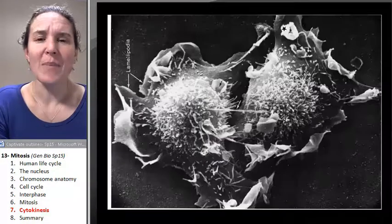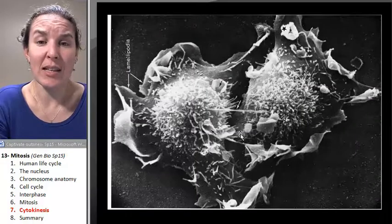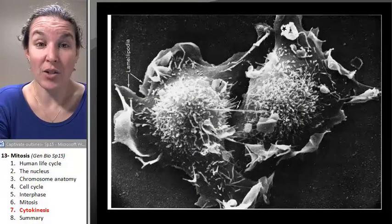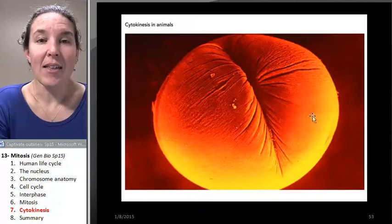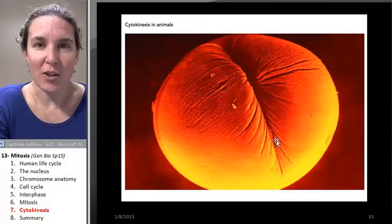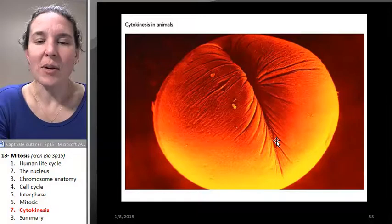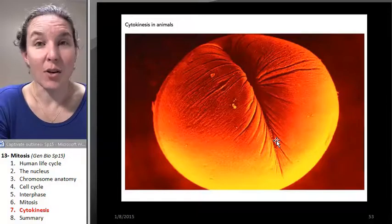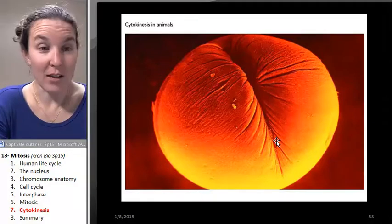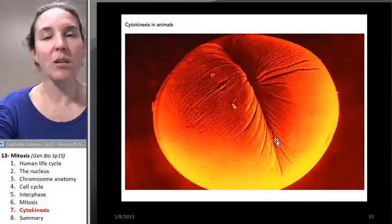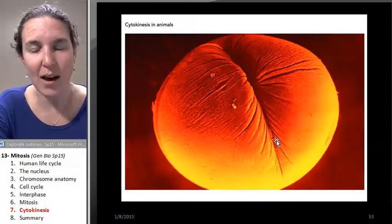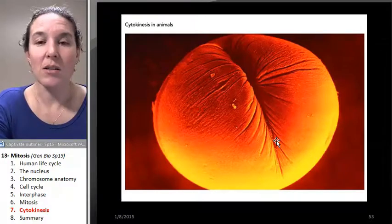That's cytokinesis in action. You can see that these cells are actually splitting apart. There's a structure called a cleavage furrow — which I never recommend you go searching for on the internet, because I made that mistake. Learn from my mistakes and don't do that — it's a little disturbing.